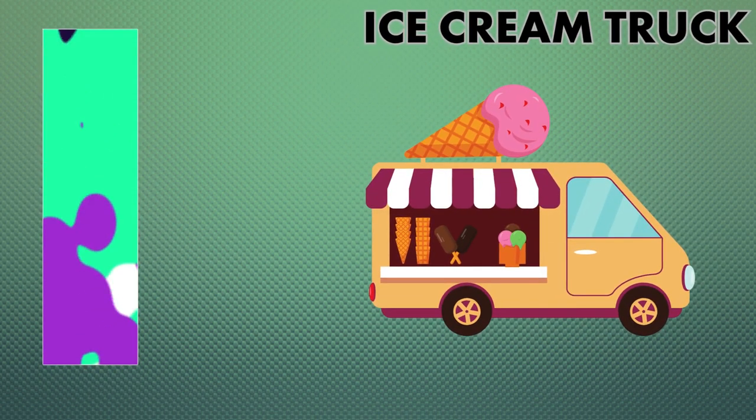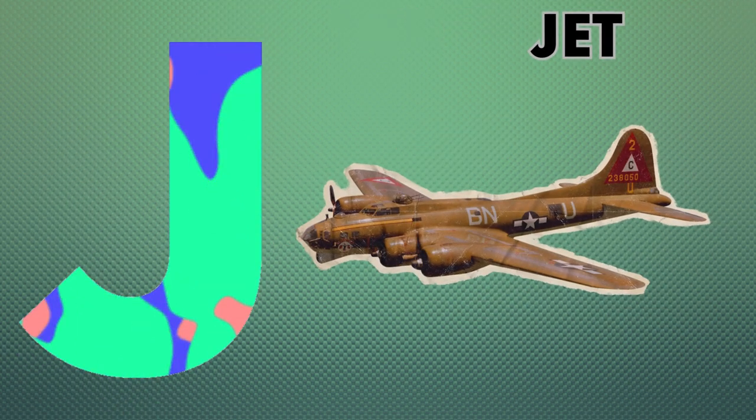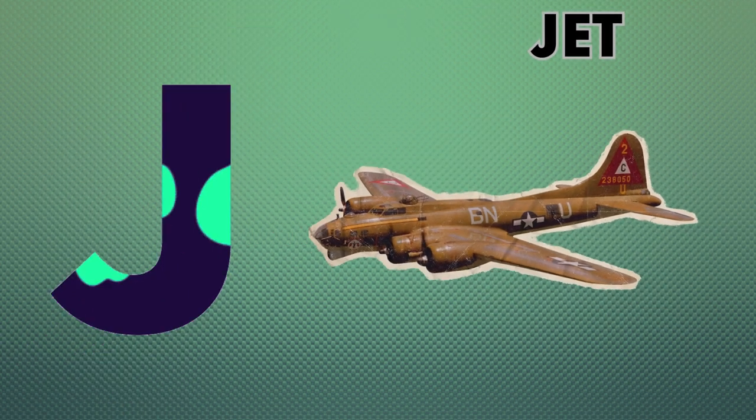I is for ice cream truck, ice cream truck. J is for jet, jet.